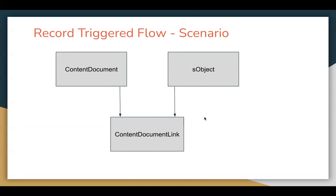It means that a file can be linked with more than one object with the help of this ContentDocumentLink junction object. So when I attach any file on Opportunity, a file record will be created under ContentDocument and a ContentDocumentLink record will be created. But when the same file needs to be linked with any other object, we just need to create a ContentDocumentLink between the existing file and the other S-object — we don't need to create the ContentDocument record again; it is created once.